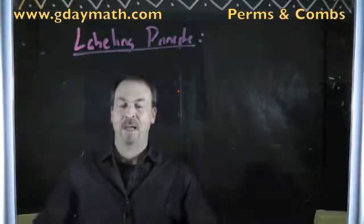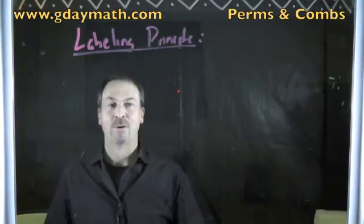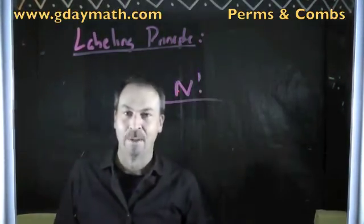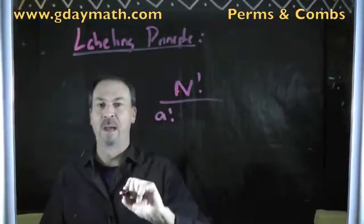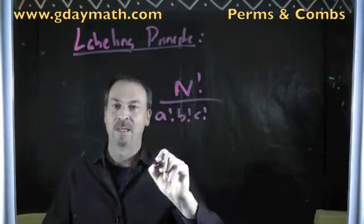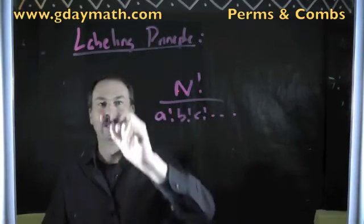Whatever the labels are, the number of ways to assign labels is just a word counting problem. There will be N letters. So you have N factorial on the top. And all the ones labeled the first way, A factorial. All the ones labeled the second way, B factorial. All the ones labeled the third way, C factorial. And so on. So that's it.